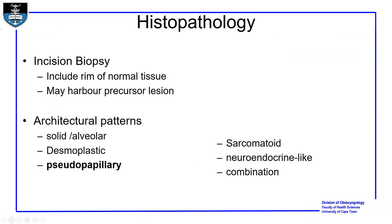For diagnosis, we need a tissue biopsy — an incision biopsy that should include a rim of normal tissue. This should be done after confirming the lesion is not one of the differentials, such as an encephalocele coming through the brain, which could cause a CSF leak. Because of the risk of bleeding, you must ensure you have facilities to control bleeding if doing it in the clinic; otherwise, it is safer to take the patient to main theatre. The biopsy must include a rim of normal tissue because it may contain precursor lesions.